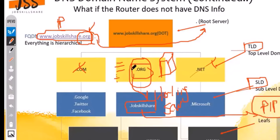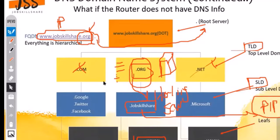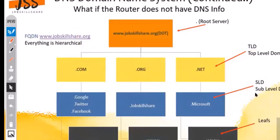At this stage, the hosting machine has the public IP being used to access jobskillshare. It will send that information back to the host machine. These www entries are known as the leaves. You'll get a better idea through the animation on the next slide.